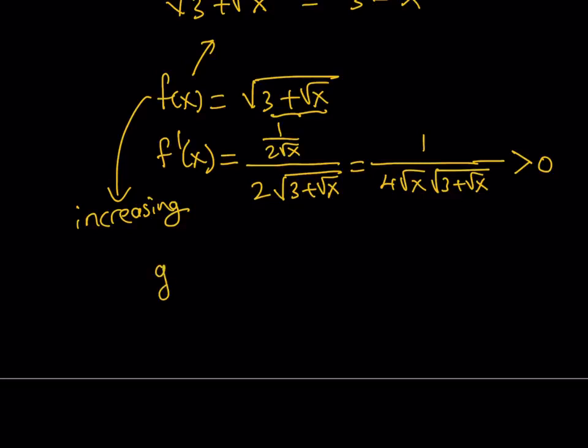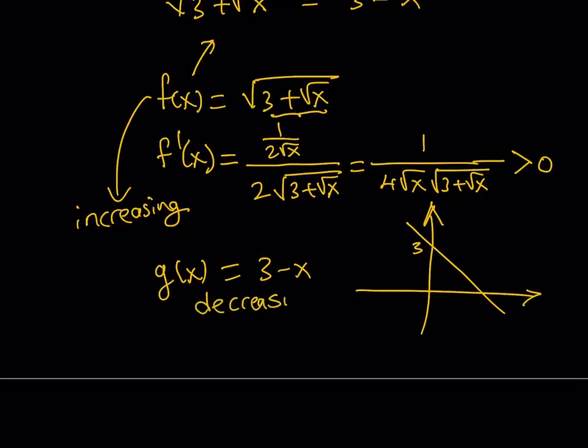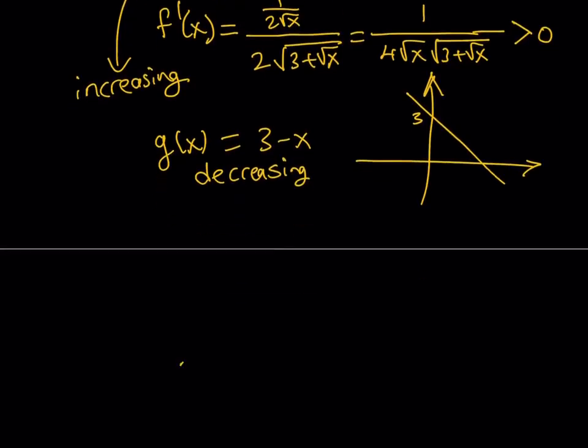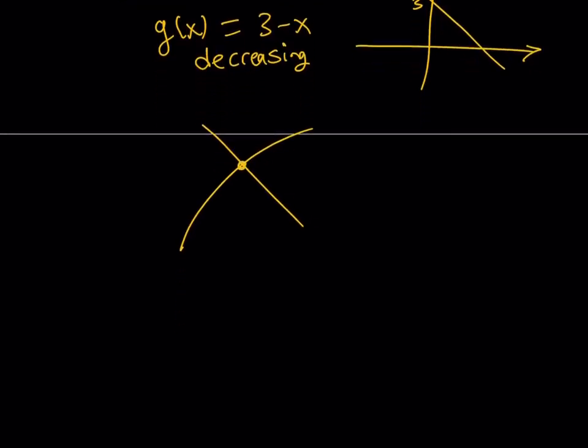What about the second function? Let's call that g of x. g of x is 3 minus x. As you know, this is a line with slope negative 1, and its y-intercept is 3, so it kind of looks like this. And obviously, clearly, it is a decreasing function. g of x is decreasing. So what is that supposed to mean? I have an increasing function, and I have a decreasing function, and they intersect at one point. That's it. And that is going to be at x equals 1. So x equals 1 is going to be the only solution for this equation.